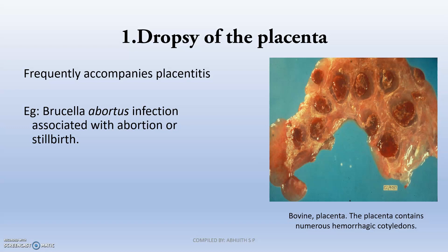The first one is dropsy of the placenta. It is actually occurring due to infection of the placenta by infectious organisms. Mainly, the best agent we can see in case of placentitis is Brucella abortus, which makes a leathery placenta or inter-cotyledonary leathery appearance.